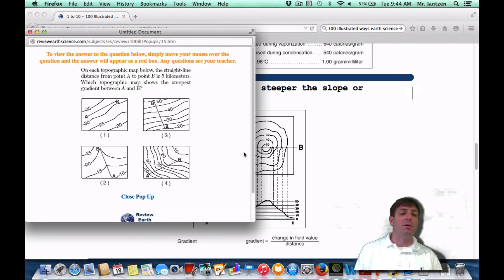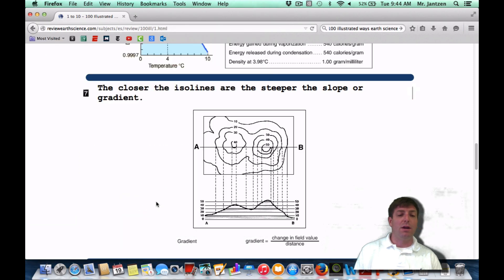Here's your Regents question. On each topo map below the straight line distance from point A to point B is five kilometers. Which topo map shows the steepest gradient between A and B? Well, you're looking for the choice that has the most lines in the shortest distance. All the distances look pretty equal, so you're actually just looking for the one with the most lines. And that's going to be choice four.